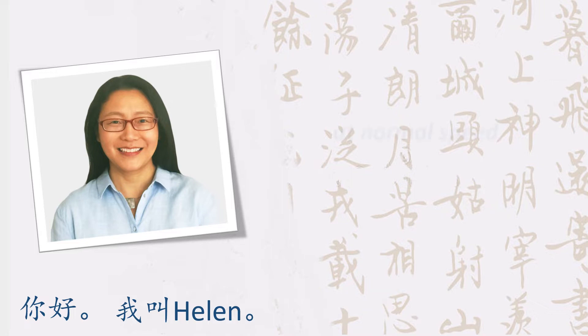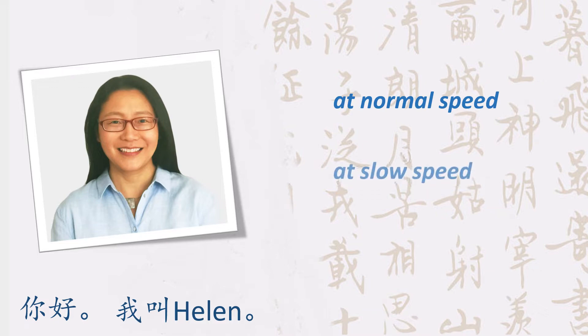First, I'll read the story at normal speed. At this time, you can only see Chinese characters. Then, I'll read it at a slower speed, and you'll see not only the characters, but also the pinyin and the translation.